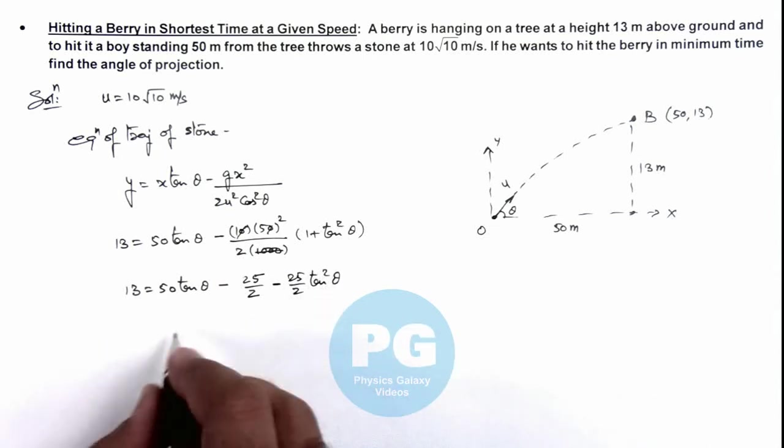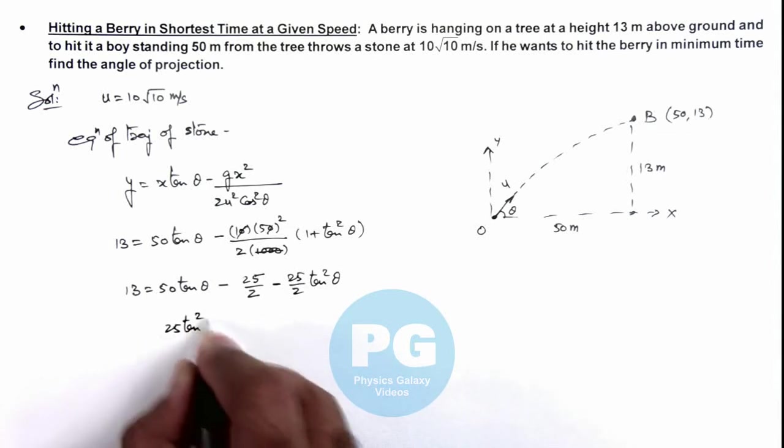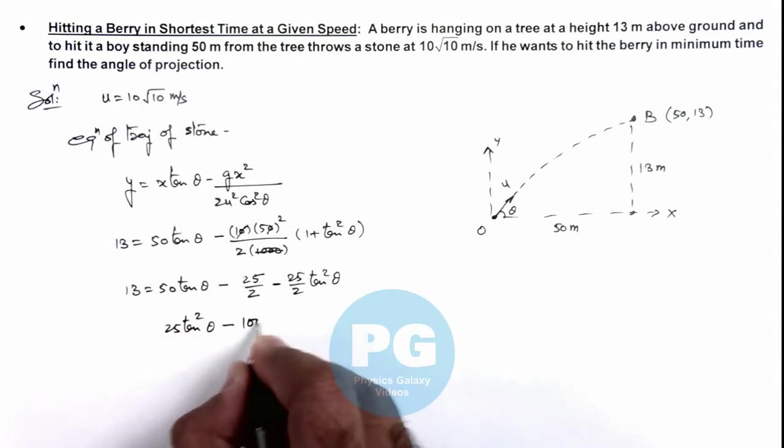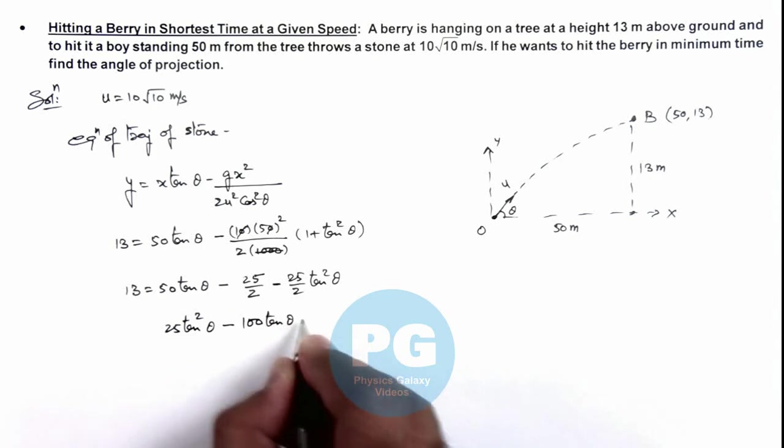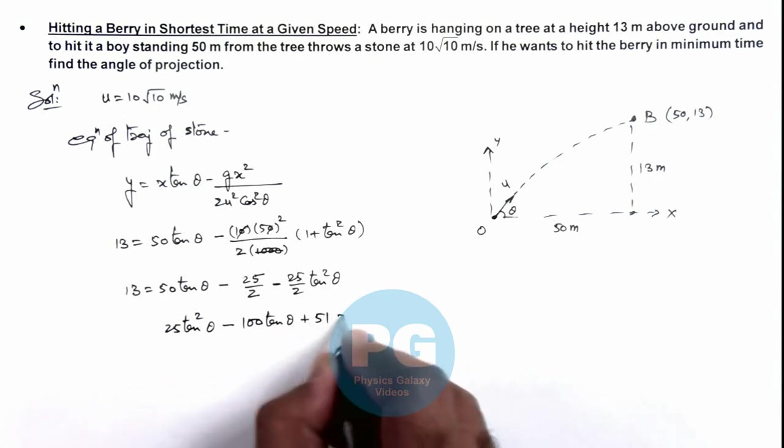So further simplifying this gives us 25 tan squared theta minus 100 tan theta plus 51 equals zero.